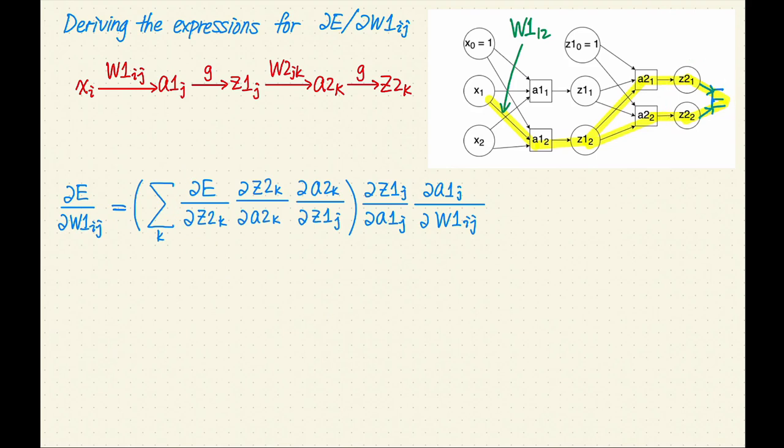Next, z2 is g of a2. Therefore, the next term is partial z2 sub k over partial a2 sub k. After that, a2 is a weighted sum of the z2s, so the next term is partial a2 sub k over partial z1 sub j. At this point, the two paths merge into one, so we can end our summation.